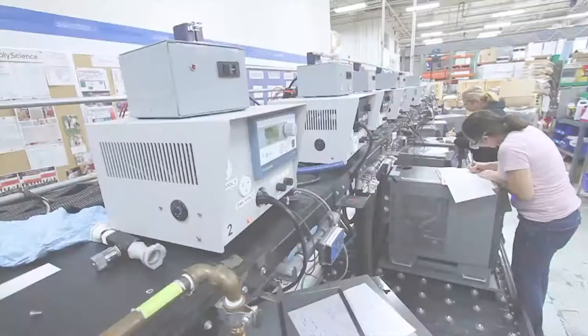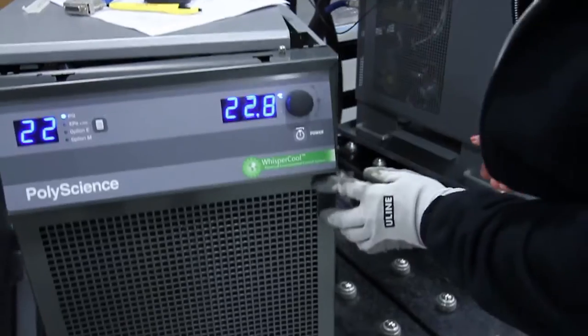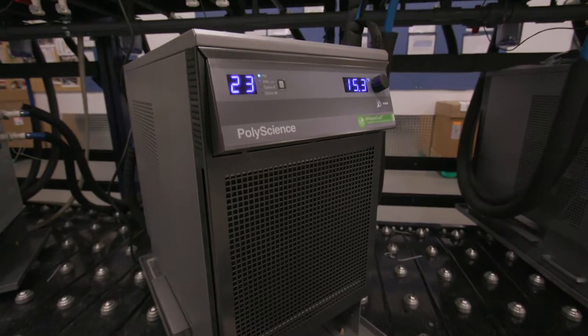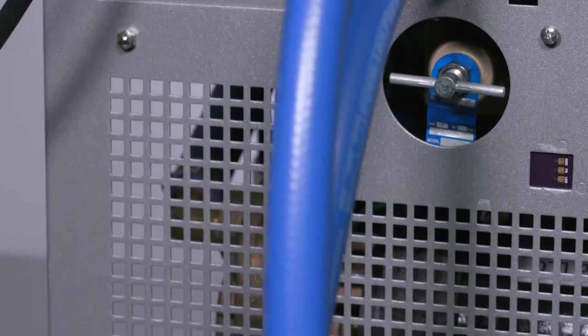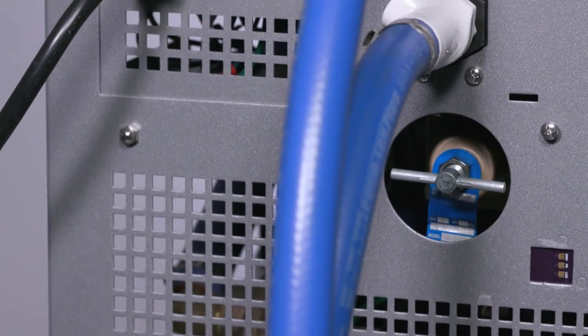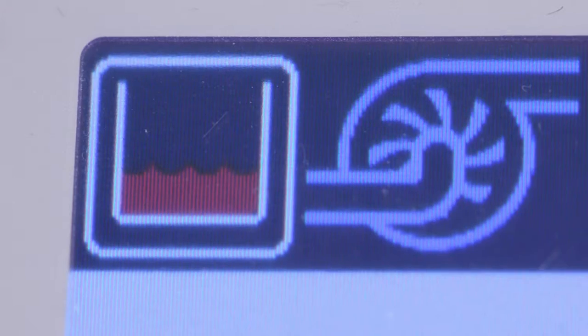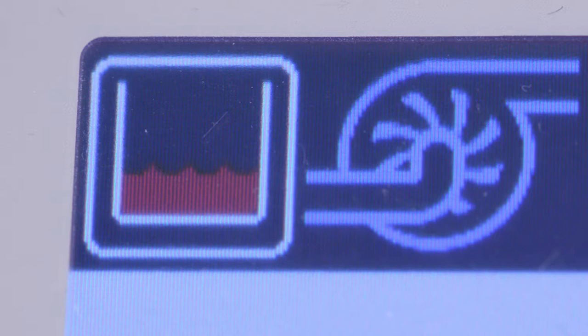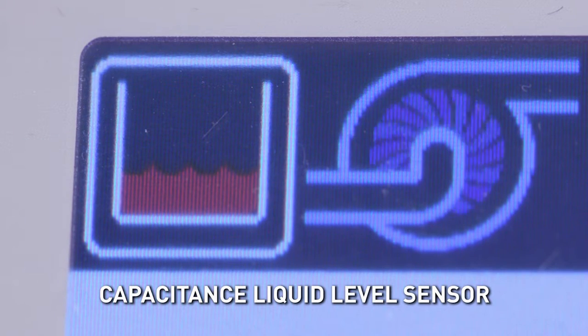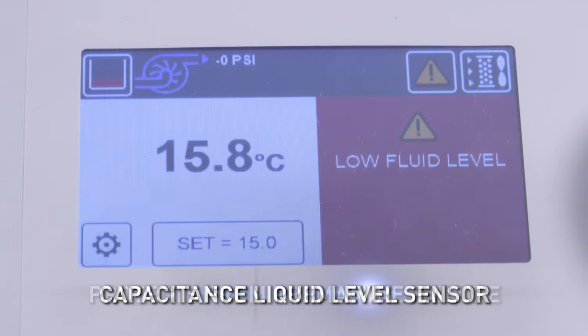innovation, and the reliability that has always been a PolyScience cornerstone. Because pump seals will fail in as little as 30 seconds of being run dry, DuraChill chillers include a state-of-the-art capacitance liquid level sensor on the reservoir to protect the pump from premature failure.